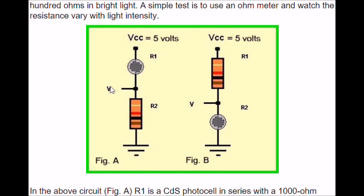Once again, as resistance drops in figure A on R1, the voltage at V will increase. While in figure B over here, as the light intensity increases, the voltage will drop at V because of more voltage being dropped across the resistor.